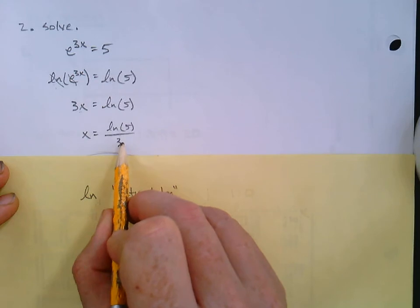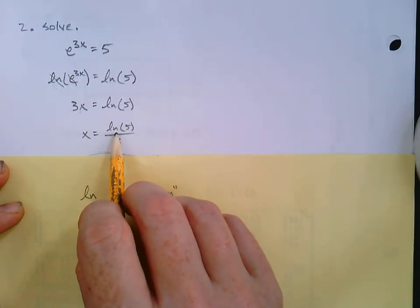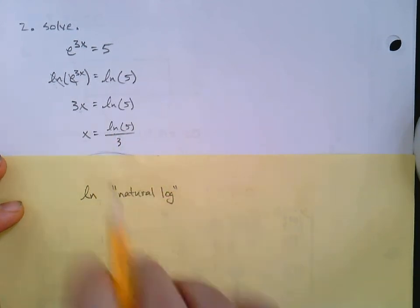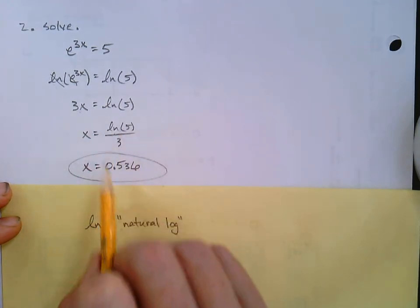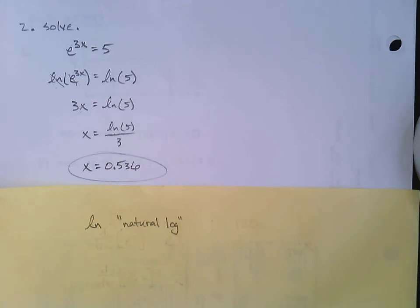X equals the natural log of 5 divided by 3. And now we're going to grab our calculator. You will be able to find in a scientific calculator, it will have a natural log button somewhere. So, I went ahead and rounded this whole thing to 3 decimal places. And in this case, it's 0.536. Okay. That's it for our prereqs. See you in the next video.